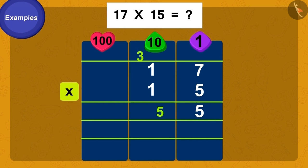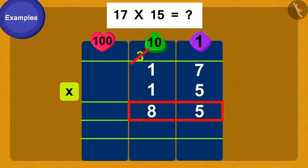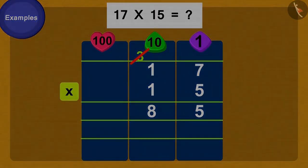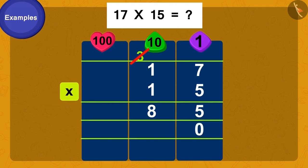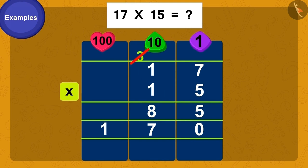Done. 8. We will write it like this. Now we will cancel the carried-over 3 so that we don't count it again. Now we will multiply the 1 of 15 by the digits of 17 from right to left, writing it in the second row. Before starting the multiplication process, we write a 0 in the units space. First, we multiply 1 by 7. 7. We will write it like this. Now finally, 1 is multiplied by 1. That's 1. We will write it like this.